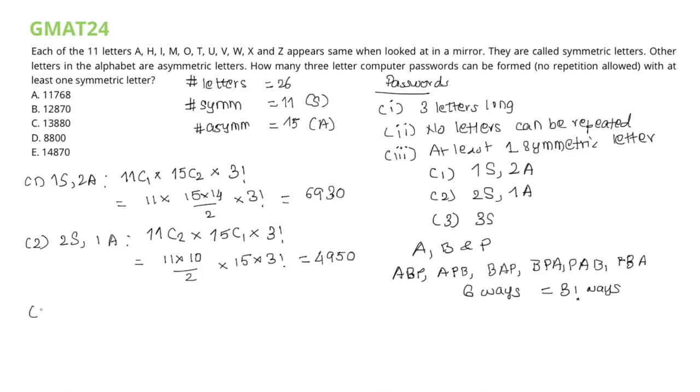In the third case, we need to pick three symmetric letters from a total of 11 symmetric letters. This could be done in 11 C3 ways. As before, the chosen letters should be unique and these letters could be rearranged among themselves in 3 factorial ways. Simplifying this expression, we get 990.